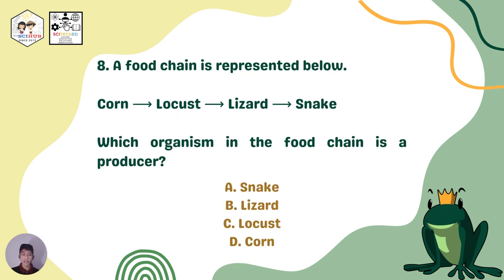Question number eight: A food chain is represented below. Which organism in this food chain is a producer? A. Snake. B. Lizard. C. Locust. D. Corn.